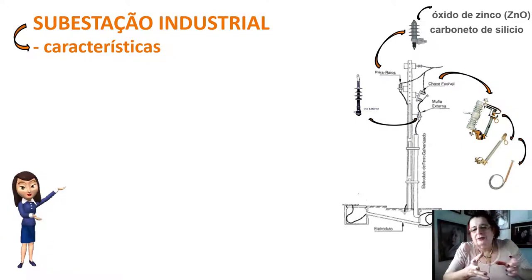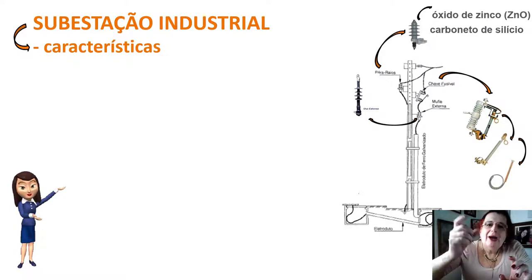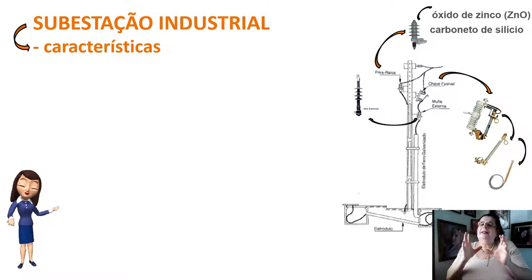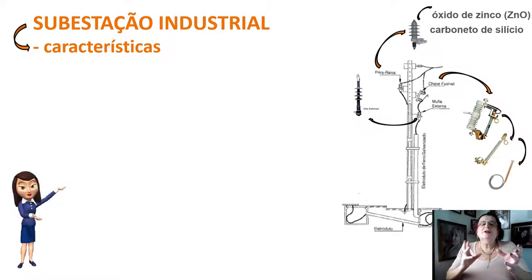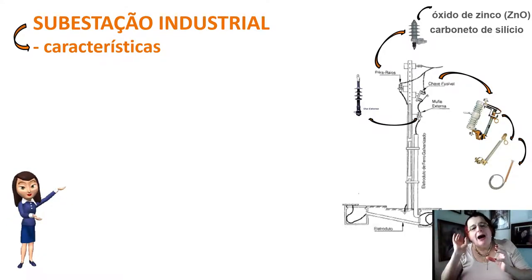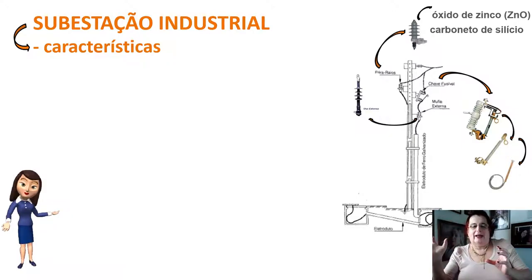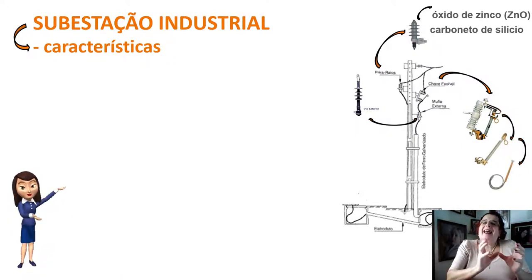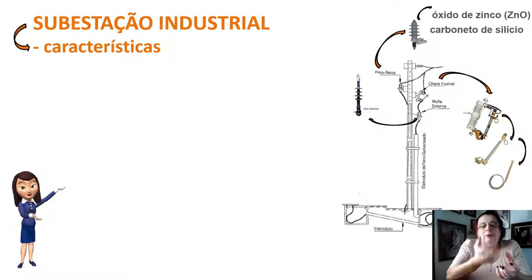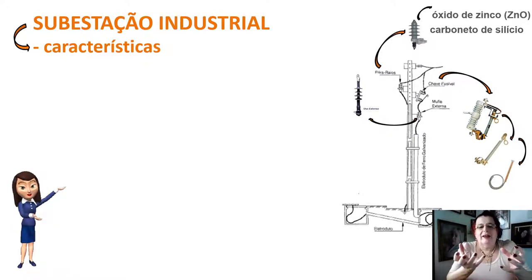As muflas são elementos de interligação entre equipamentos dentro da subestação. Existem muflas externas, que podem ser submetidas aos intempéries de chuva e sol, e muflas internas, que devem ser instaladas dentro da subestação, protegidas por tetos e alvenaria.